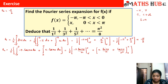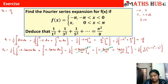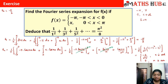Now which terms become zero? sin(0) = 0 and sin(nπ) = 0, so those terms vanish. We are left with 1/π · (1/n²) · [cos(nπ) − cos(0)], which is (1/n²π)[(-1)ⁿ − 1]. When n is odd, this gives minus 2/(n²π); when n is even, (-1)ⁿ = 1 and the result is 0. So aₙ = minus 2/(n²π) when n is odd, and 0 when n is even.